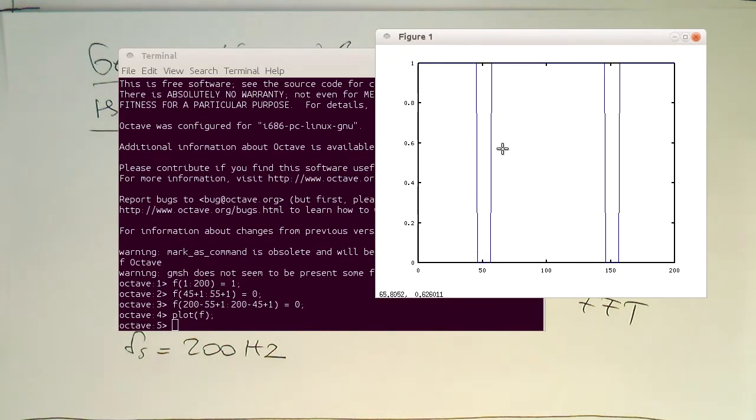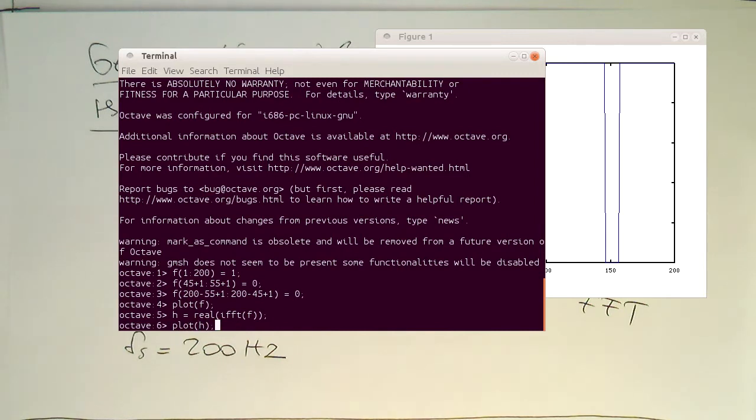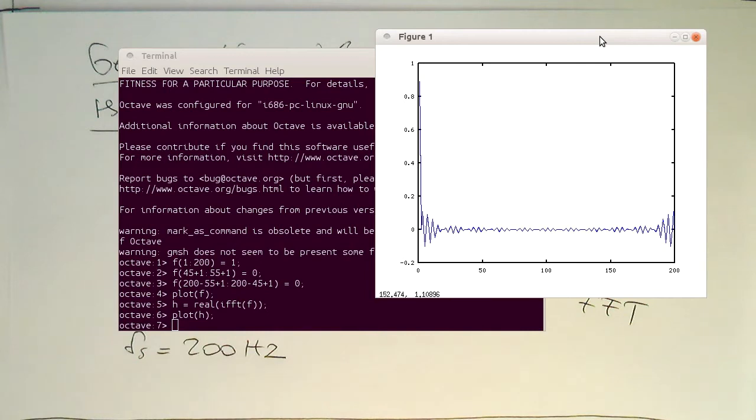So this is our ideal frequency response. So the only thing what we now need to do is just do an inverse Fourier transform of that. So we can just create our impulse response with this. We just need a real part of this. IFFT of F. So let's plot this. And so now we see our impulse response here.